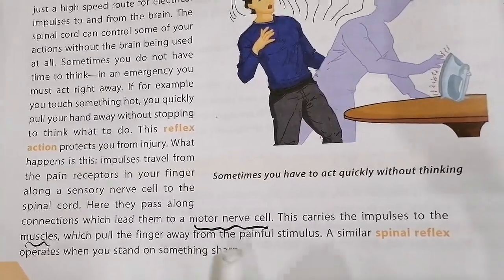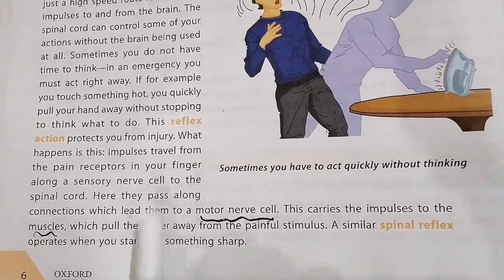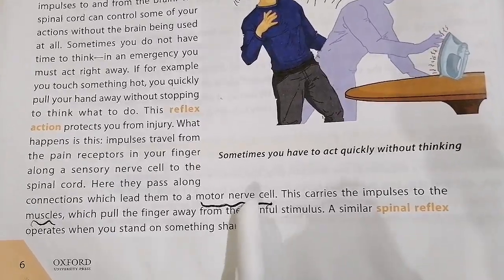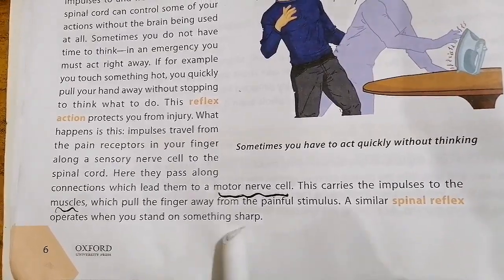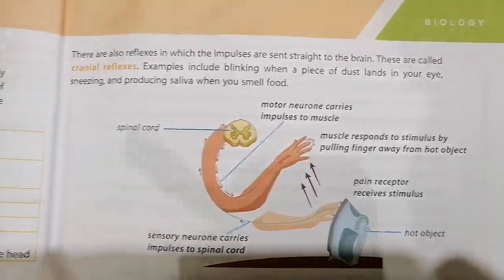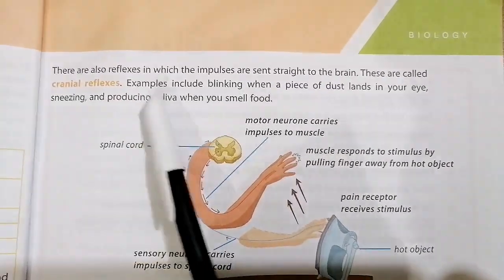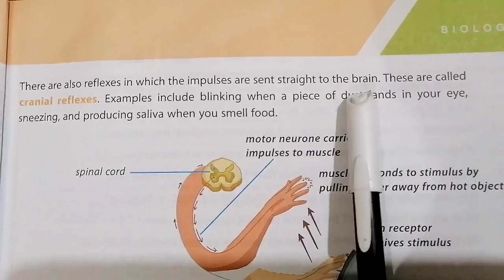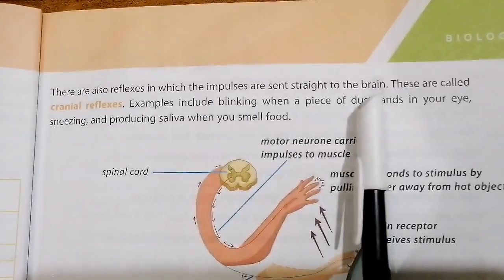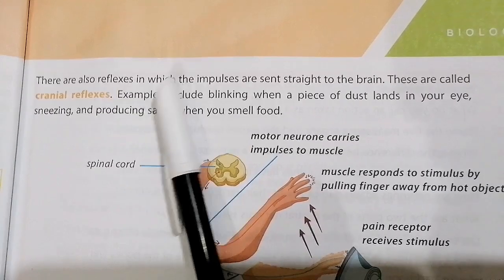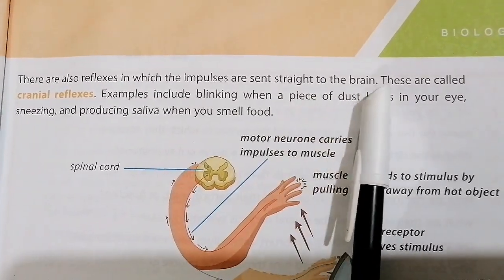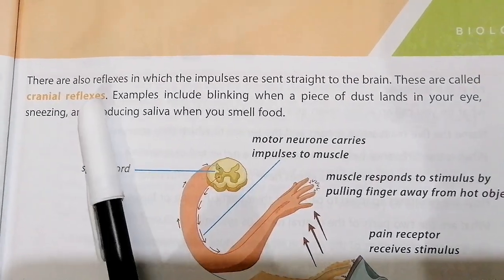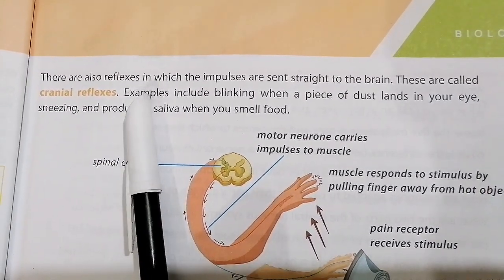The muscles pull the finger away from the painful stimulus. A similar spinal reflex occurs when you stand on something sharp — impulses are sent and the foot is pulled away. There are also reflexes where impulses are sent straight to the brain. These are called cranial reflexes, and they are two different types.